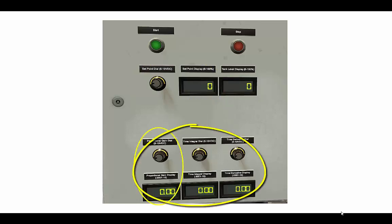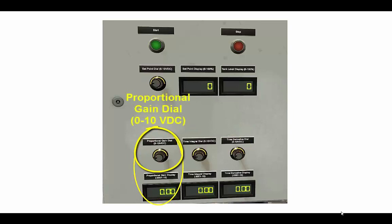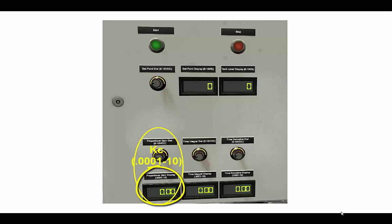The knobs and displays here on the bottom are where I will manually control the proportional, integral, and derivative gain. This one here on the left is a potentiometer that will output 0 to 10 volts DC, and that should be correlated to my proportional gain, or my KC value in my PID instruction. And it should be displayed on this digital display.